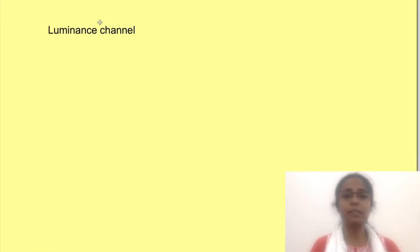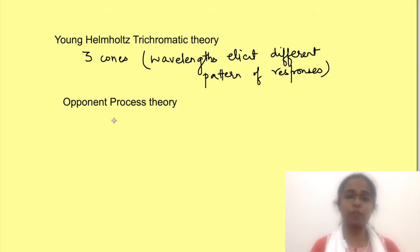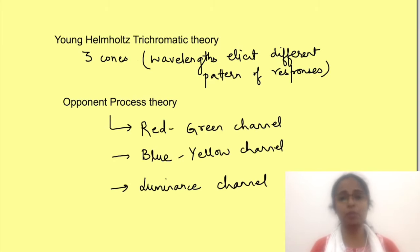Then as already stated there is one more channel where the signal from M, L and S cones is added. This is the black white channel or luminance channel. This tells us how much bright the color is. So we saw two theories of color vision: Young Helmholtz's trichromatic theory and color opponent theory, in which we talked about three processing channels - that is red green channel, blue yellow channel, and luminance channel.